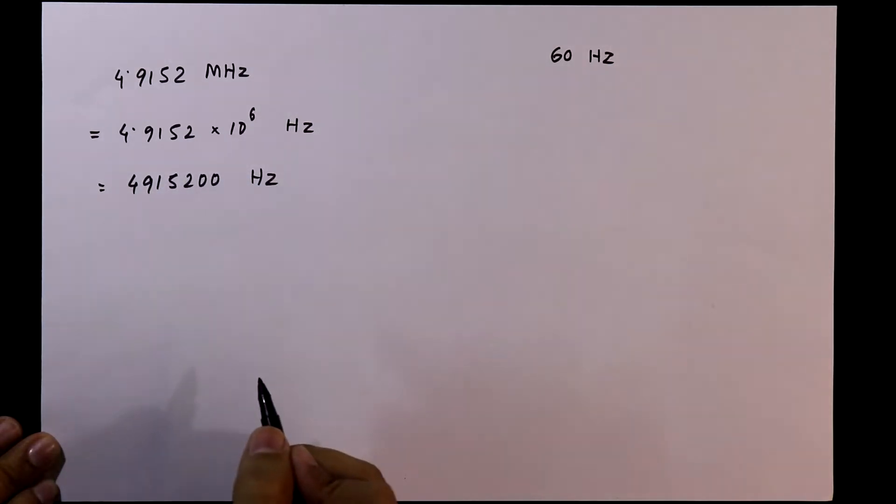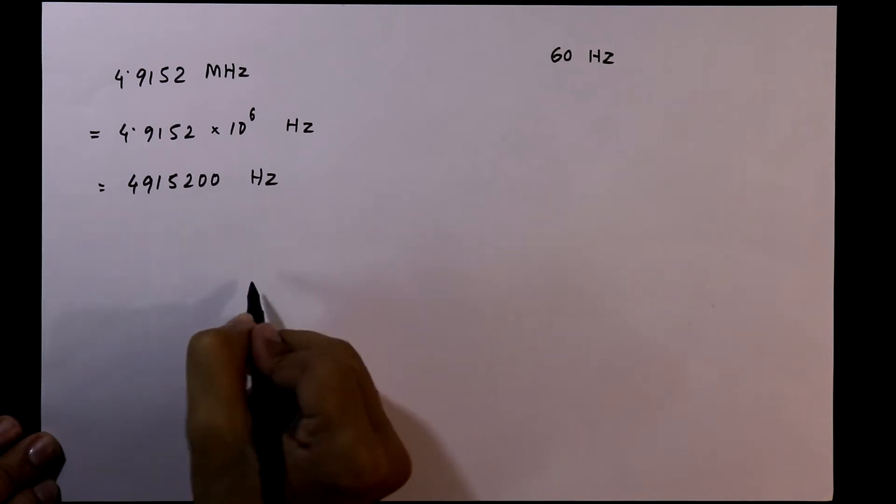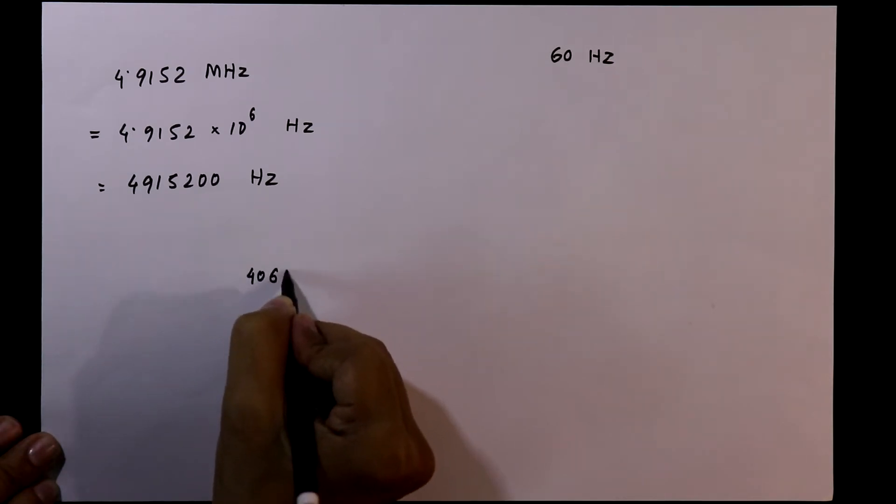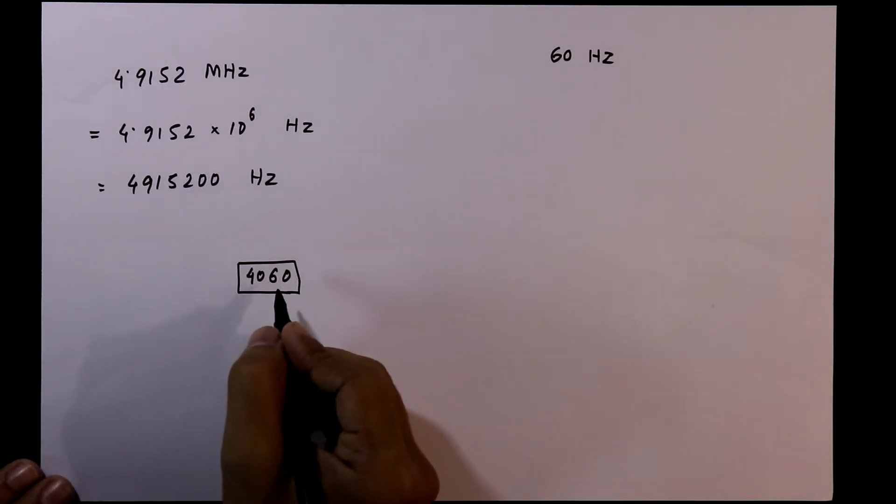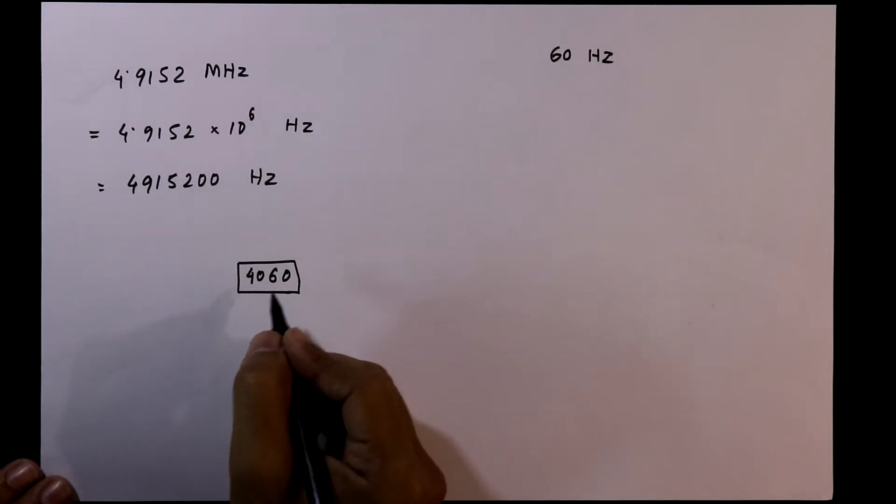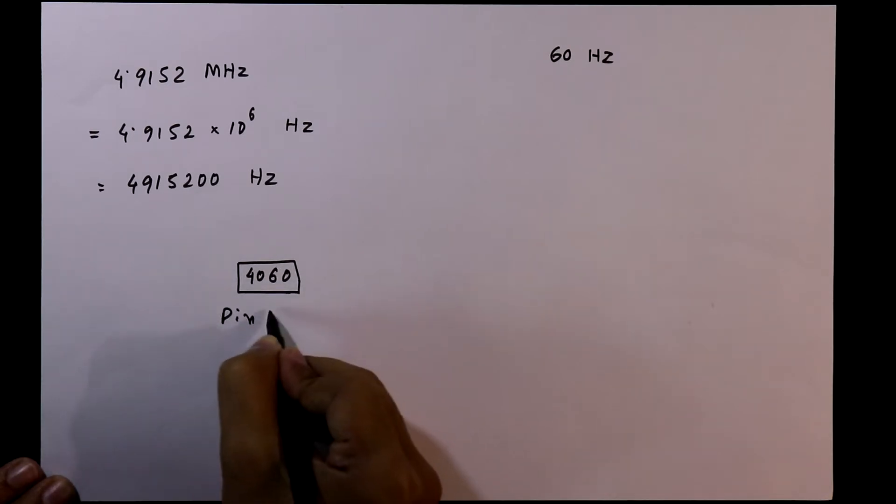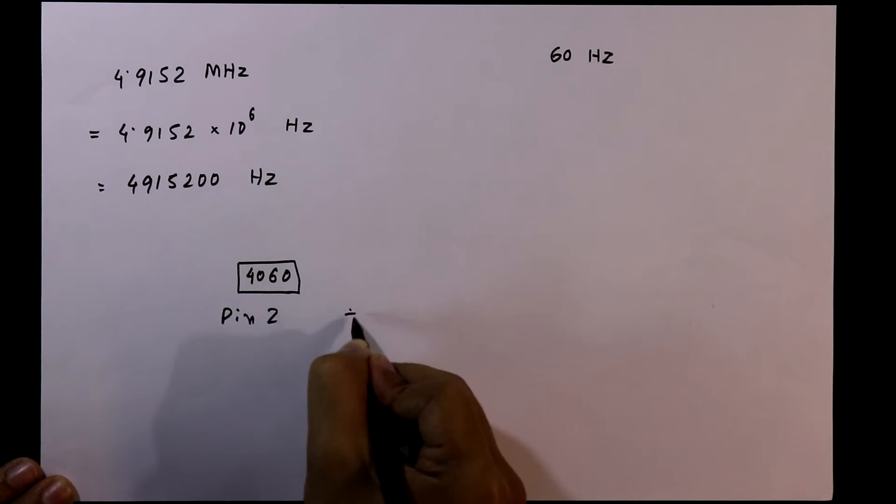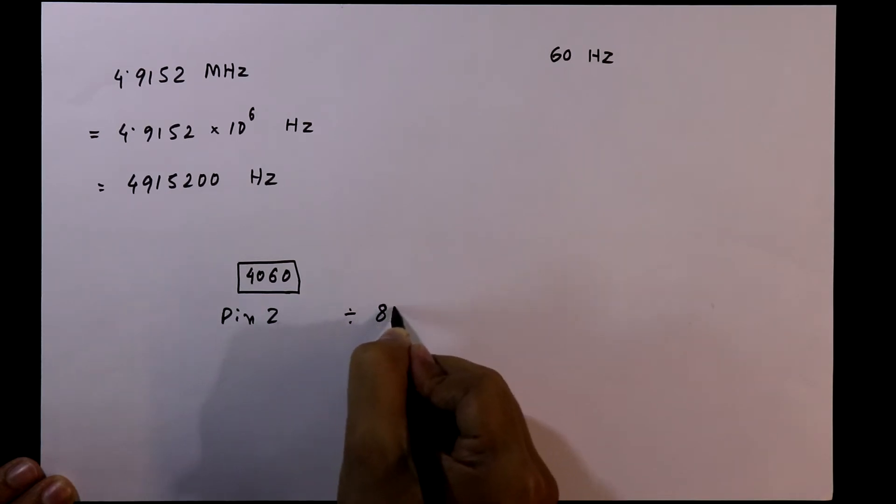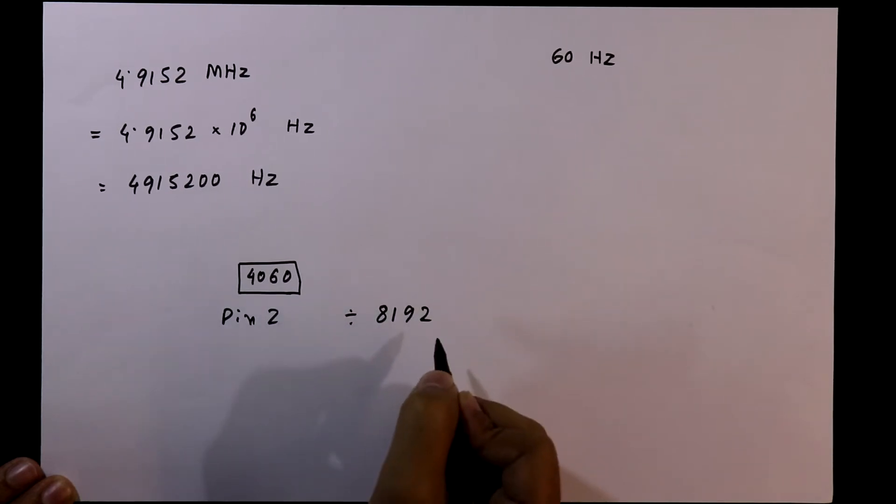We are using 4060 frequency divider IC. I already explained about this IC in the first video of this series, and we know that pin number 2 of this IC can divide a frequency by 8192.